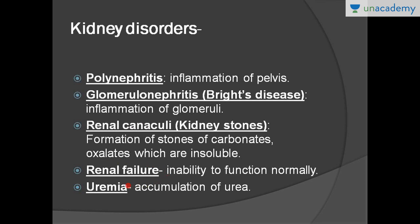Then we can have renal failure — it can be acute or chronic. It's when the kidney is not able to function normally and the GFR is reduced. We can observe it via serum creatinine, blood urea levels, and BUN — blood urea nitrogen levels. Uremia is the accumulation of urea in blood, which can be very harmful and can damage the kidney in the long term.